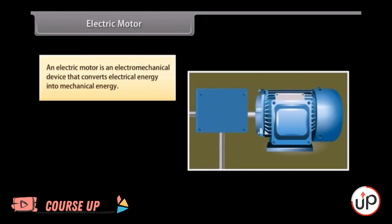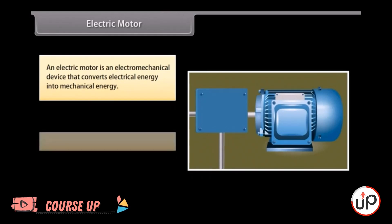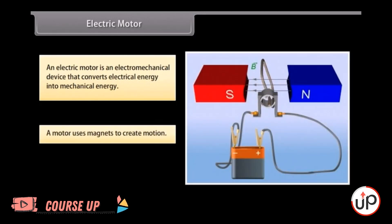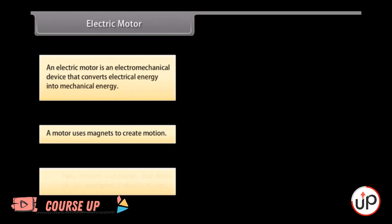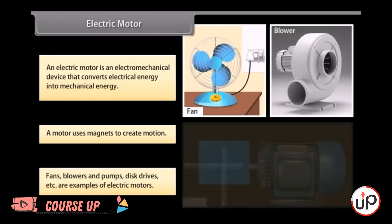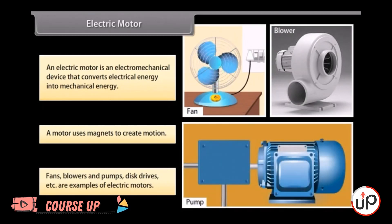Electric motor. An electric motor is an electromagnetical device. It converts electrical energy into mechanical energy. Let us look at how electric motors work. A motor uses magnets to create motion. Inside an electric motor, the attracting and repelling forces of a magnet create rotational motion. Fans, blowers, and pumps, disc drivers, etc. are some examples of electric motors.